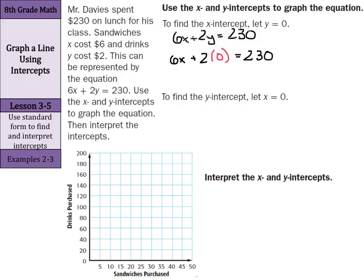Well, 2 times 0 is 0, so we're left with 6x equals 230. And if we divide by 6 on both sides, we are left with x equals 38.33.